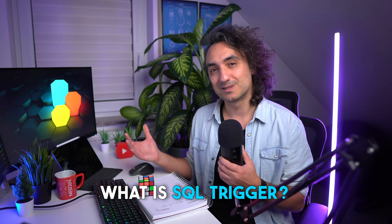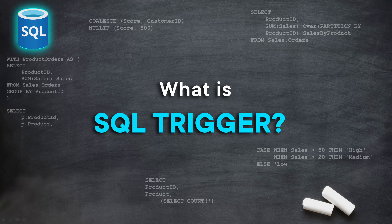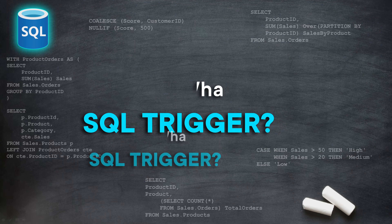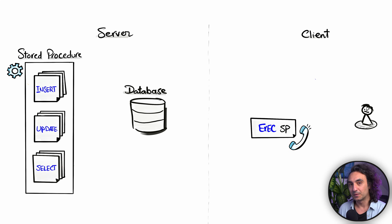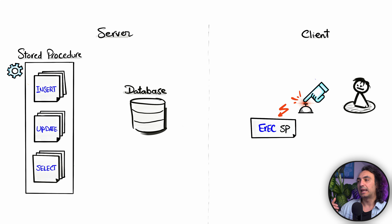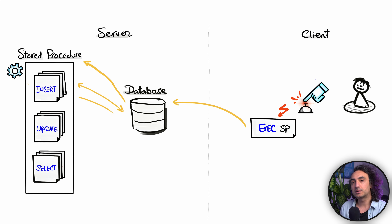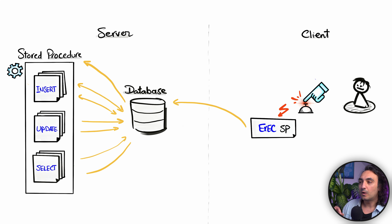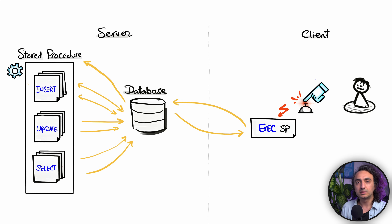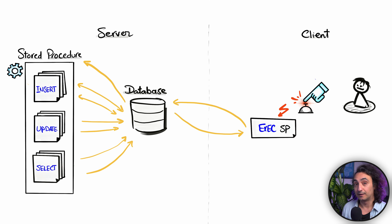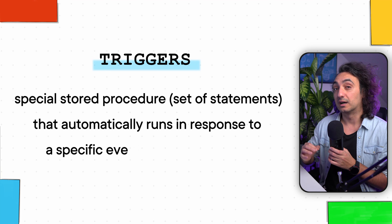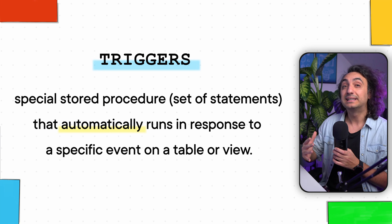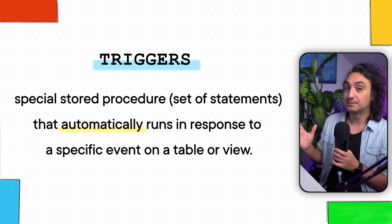What are SQL triggers? Previously we understood that we can put all our SQL statements in one stored procedure and you have to manually execute it. So in order to trigger the stored procedure you have to manually execute it, and this is of course a problem. Triggers in SQL are special stored procedures that automatically run, or let's say fired, in response to a specific event.